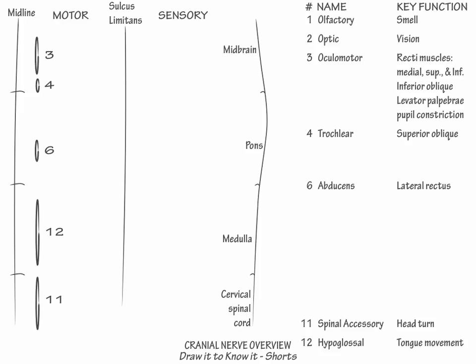Now in the lateral motor area, in the rostral pons, draw the motor portion of cranial nerve 5, the trigeminal nerve, which provides mastication. Then in the caudal pons, draw the motor portion of cranial nerve 7, the facial nerve, which provides facial movement, such as smile and eyelid closure.